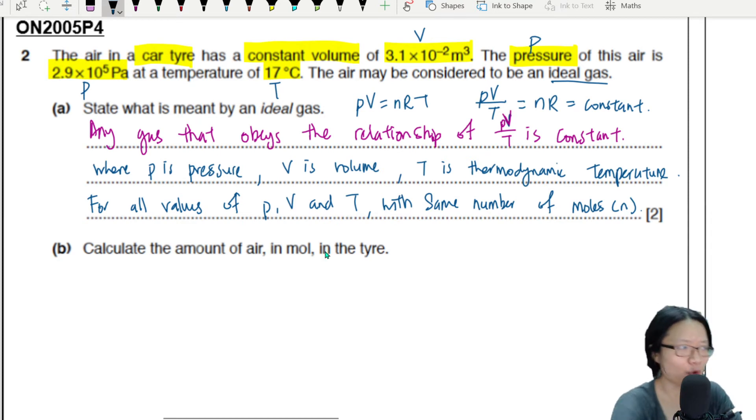Let's jump on to part B. Calculate - okay, need equation - the amount of air in mole in the tire. So good news, ladies and gentlemen, you can use PV is equal to nRT. Just be extra careful and make sure everything you substitute is in SI.